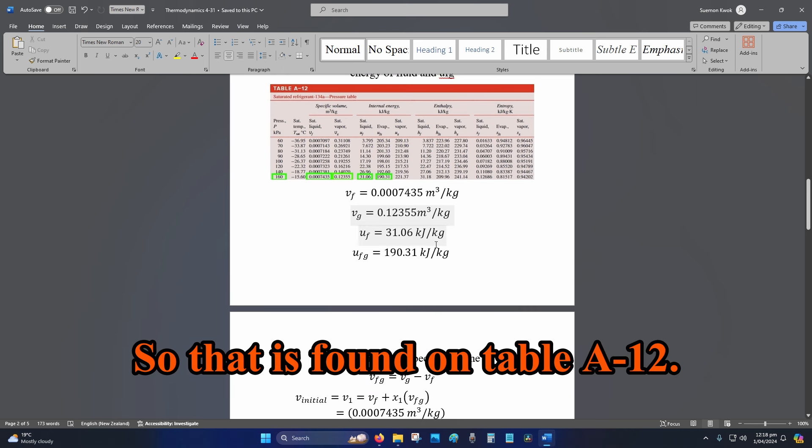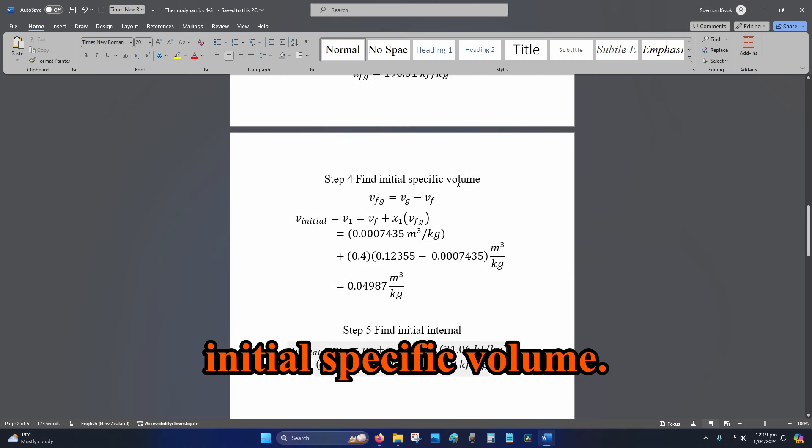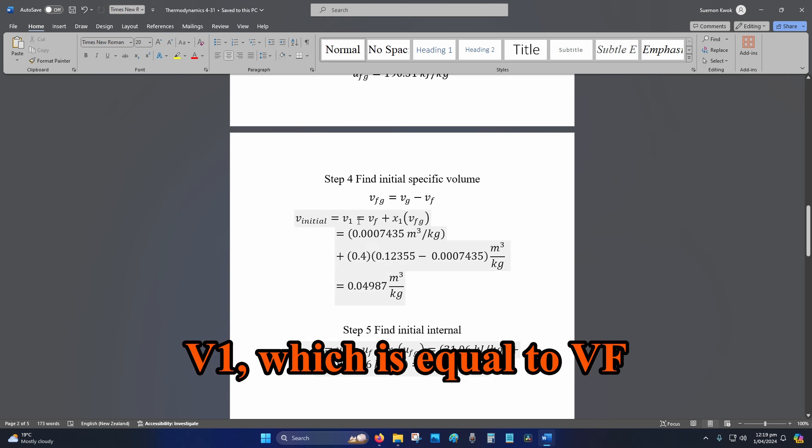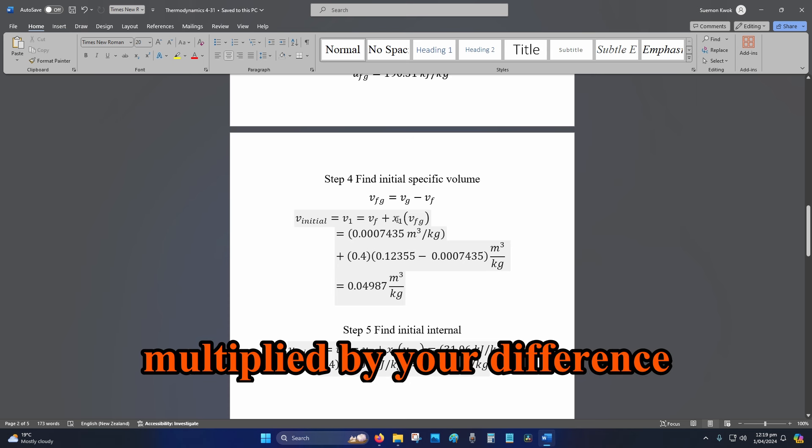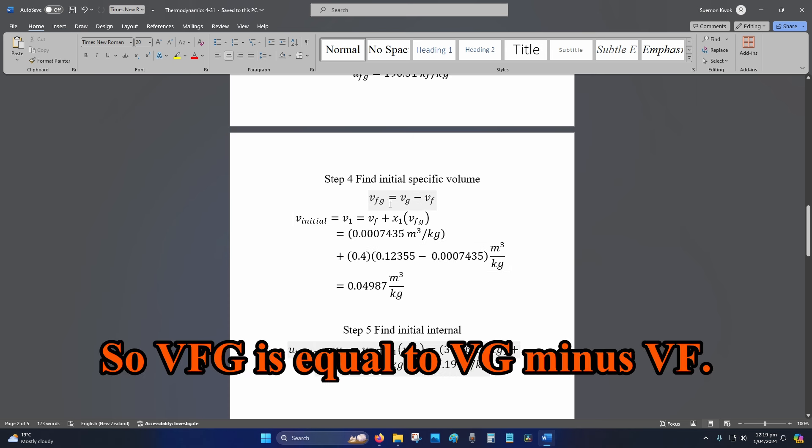That is found on table A-12. Step 4: Find your initial specific volume. v_initial equals v_1, which equals v_f plus your quality multiplied by the difference in fluid and gas. So v_fg equals v_g minus v_f.